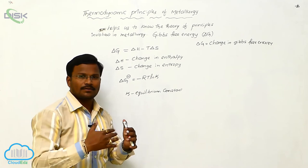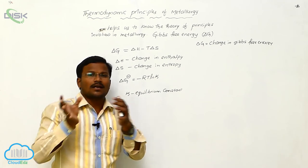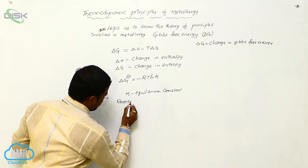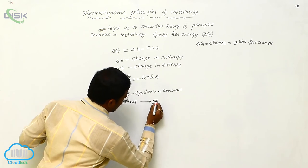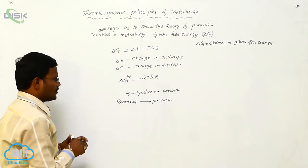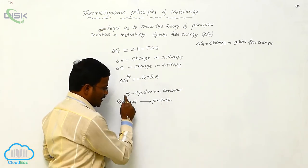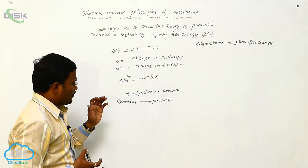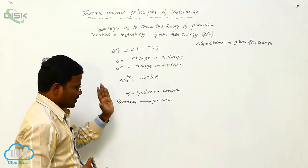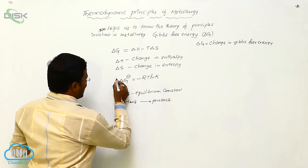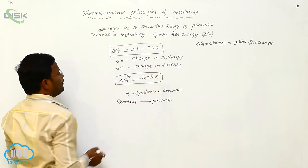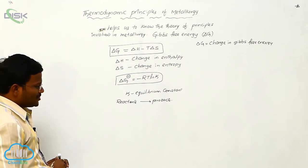The equilibrium constant K applies during a chemical reaction when reactants are converted into products and equilibrium is formed. The value of K changes with changing temperature.